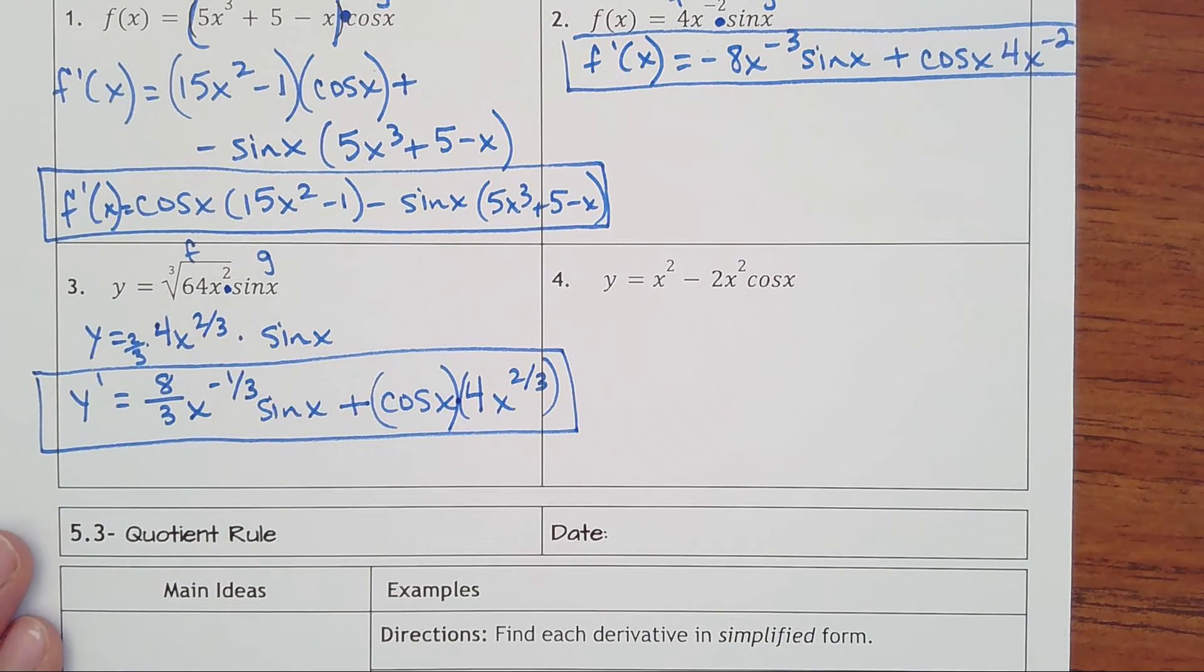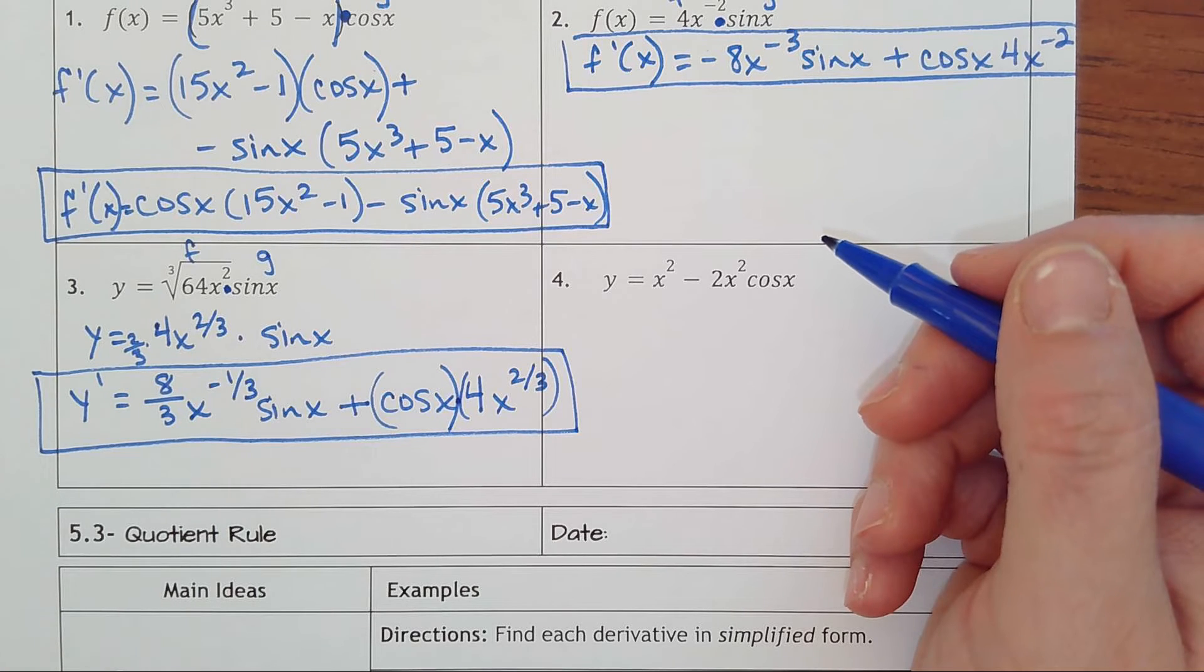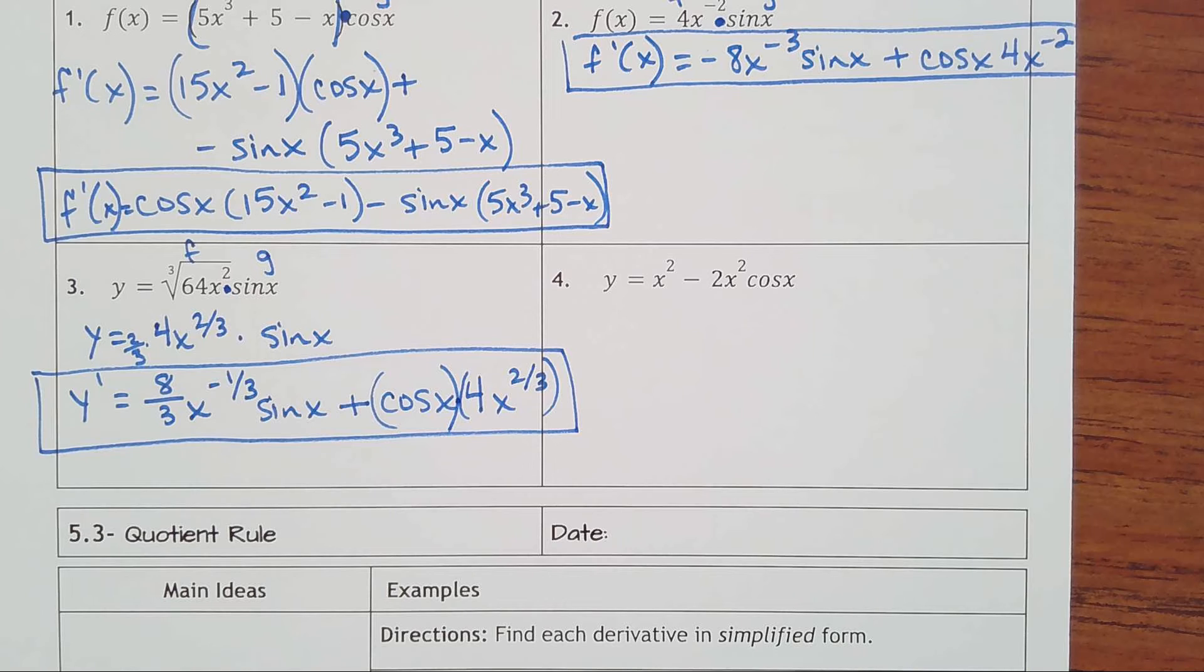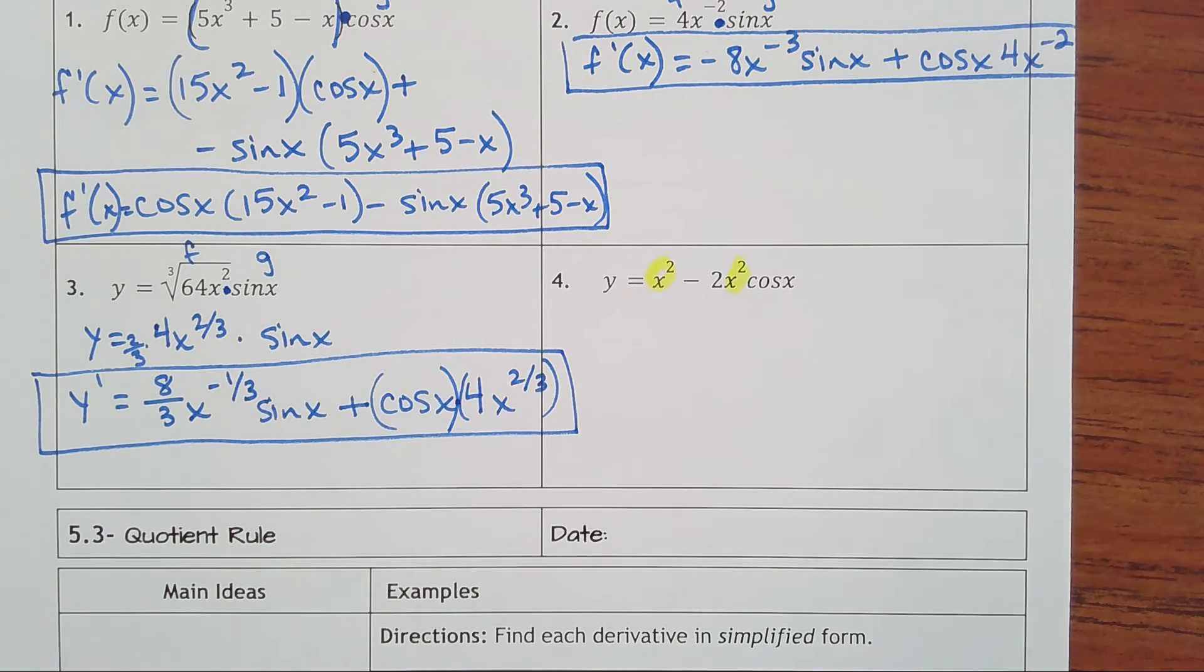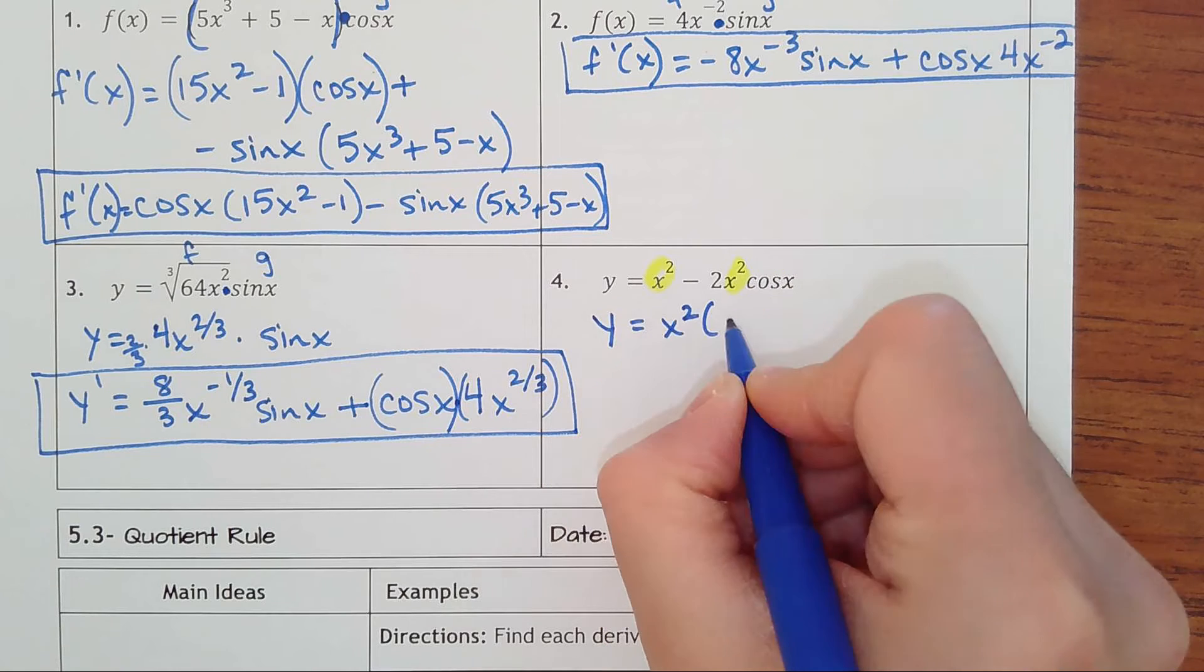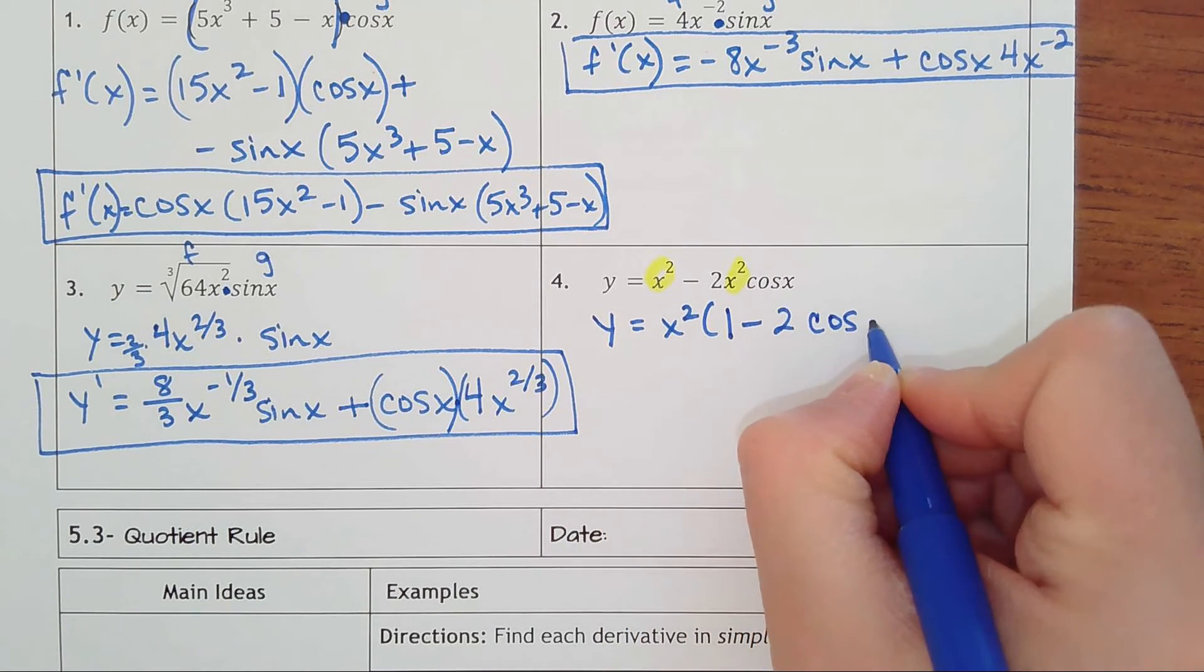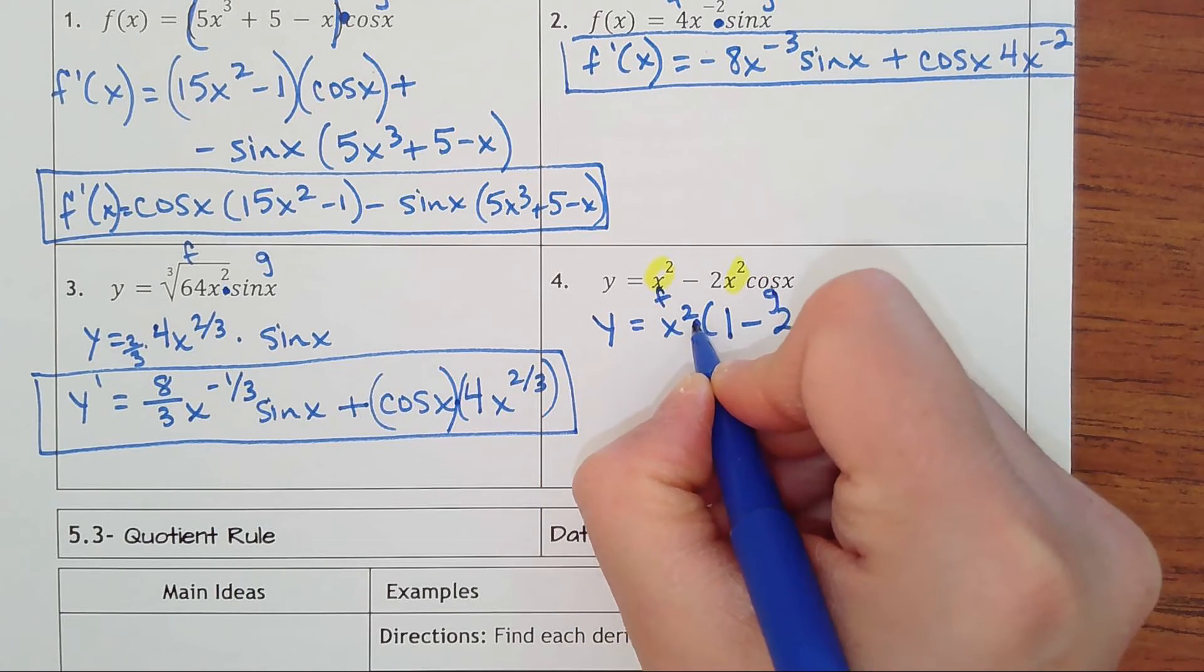And then number four. We have x squared minus 2x squared cosine of x. Notice how both terms have an x squared. I would factor that out so this looks a little nicer. So if I factor out an x squared here, that leaves me with 1 minus 2 cosine of x. So this is really my first function. This is my second one. My multiplication is here.